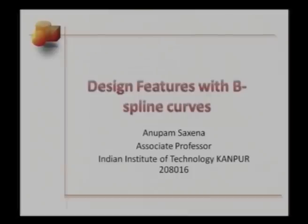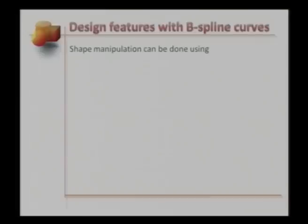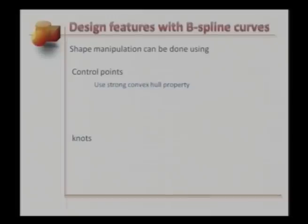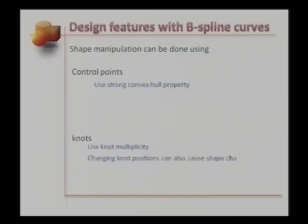Let us now apply what we have learned to understand how to design features with B-spline curves. Shape manipulation of B-spline curves can be done using either control points or knots. When working with control points, we can use the strong convex hull property. When working with knots, we can use knot multiplicity. Changing the positions of knots can also cause shape change, but it is not intuitive and therefore avoided.